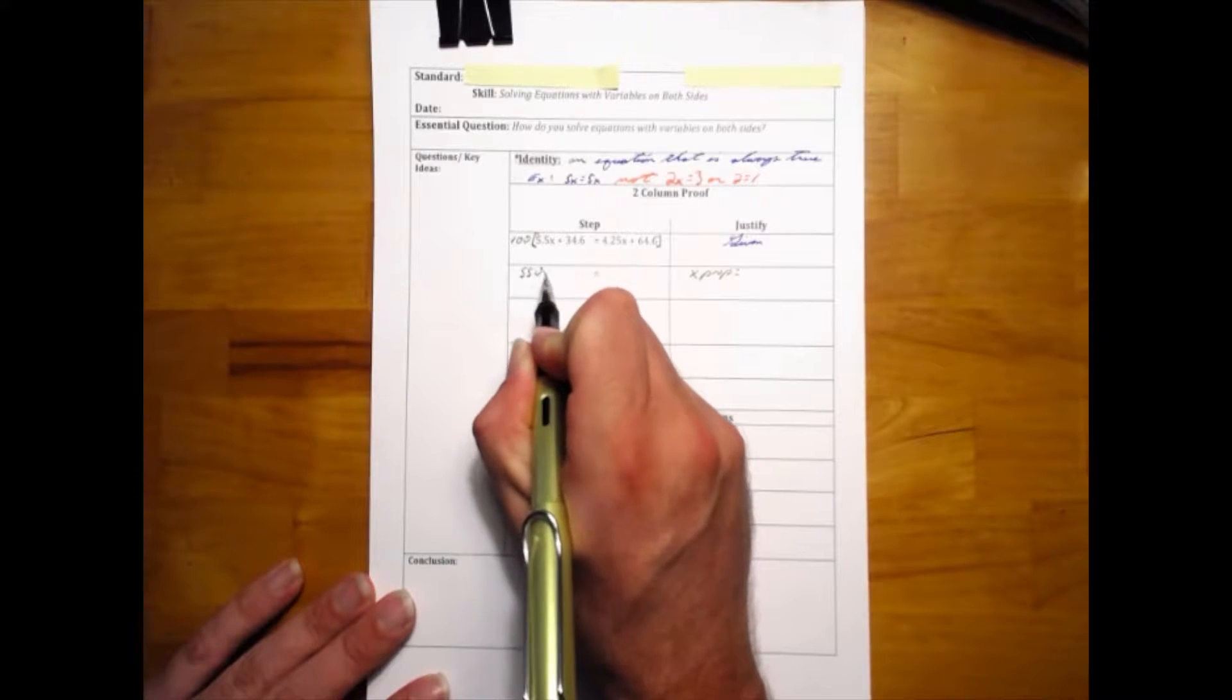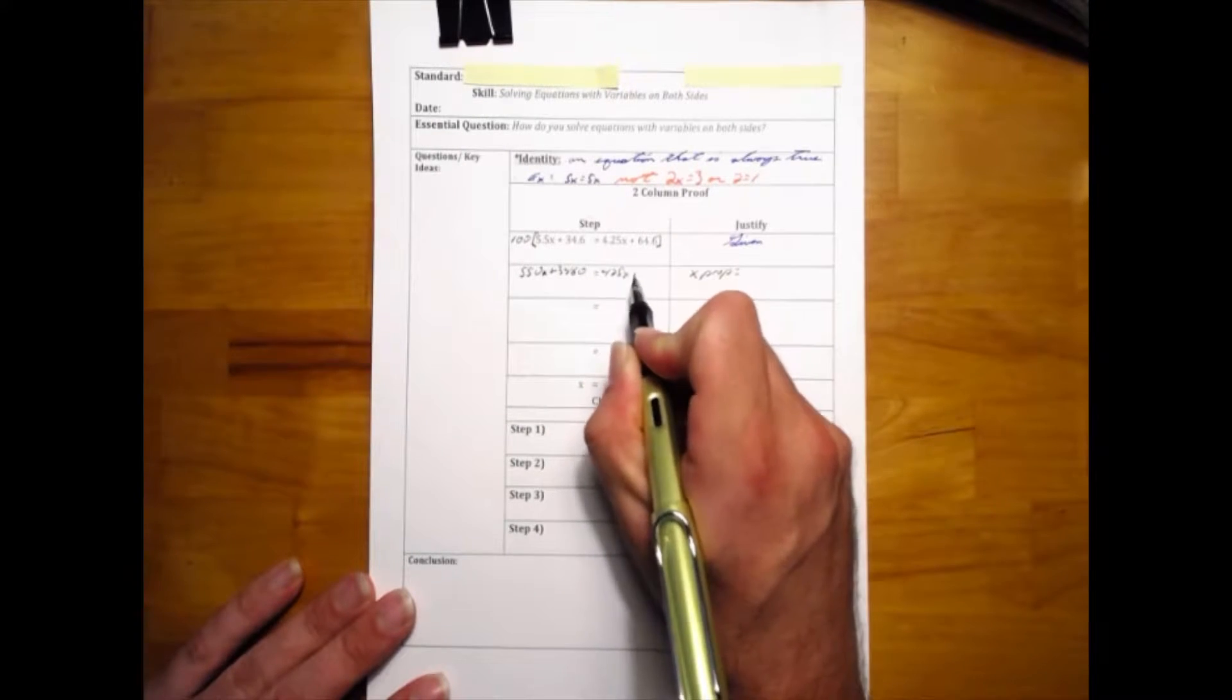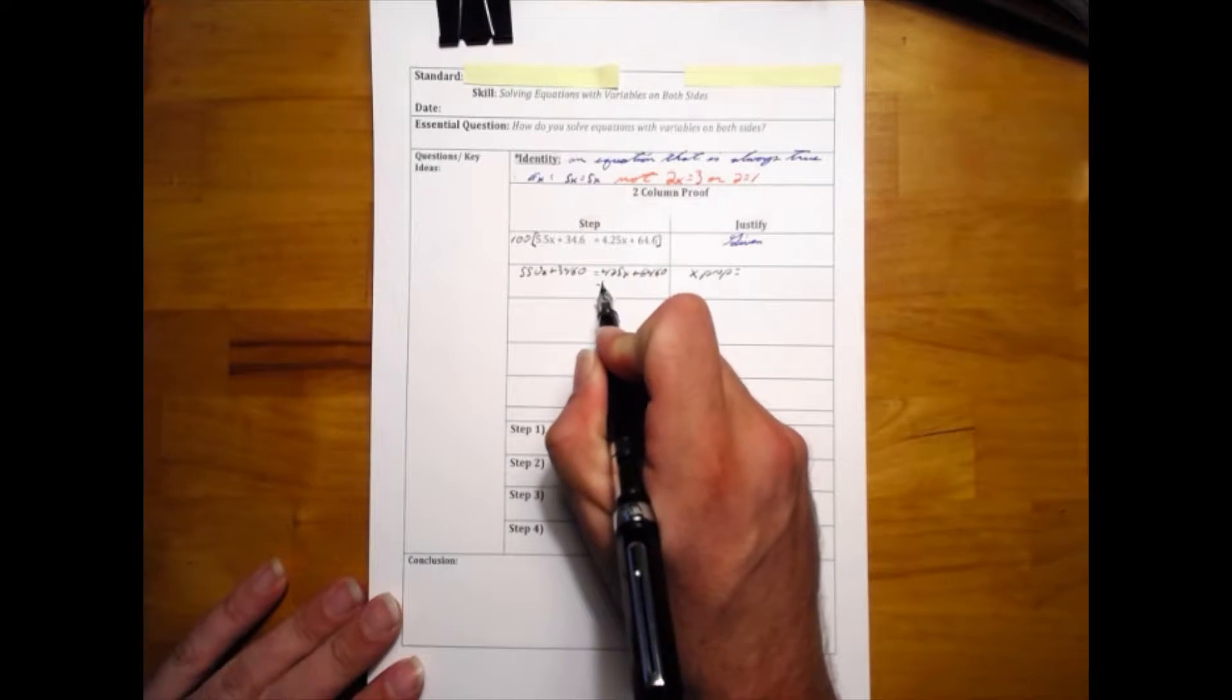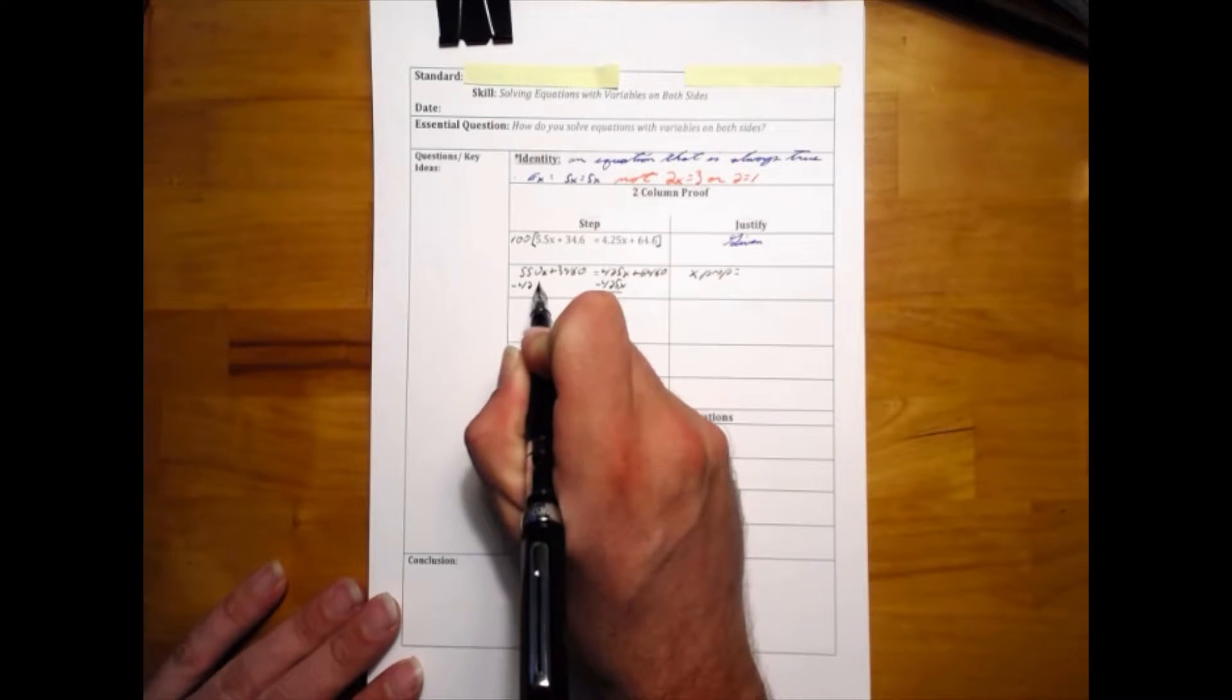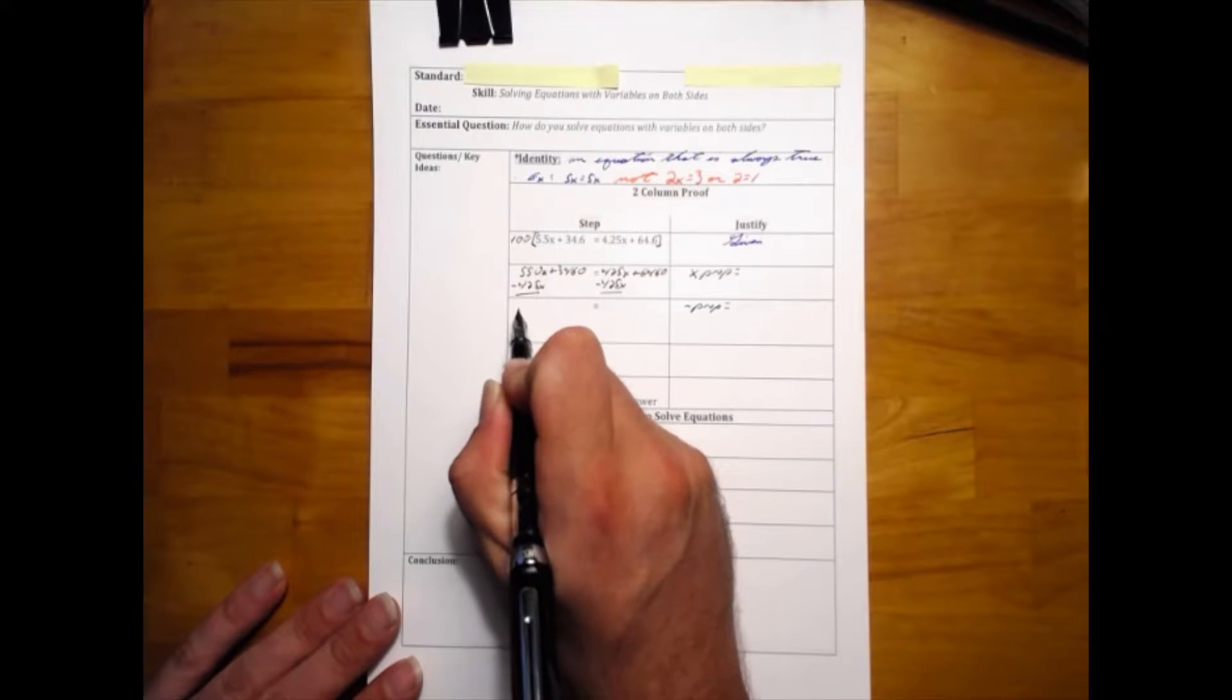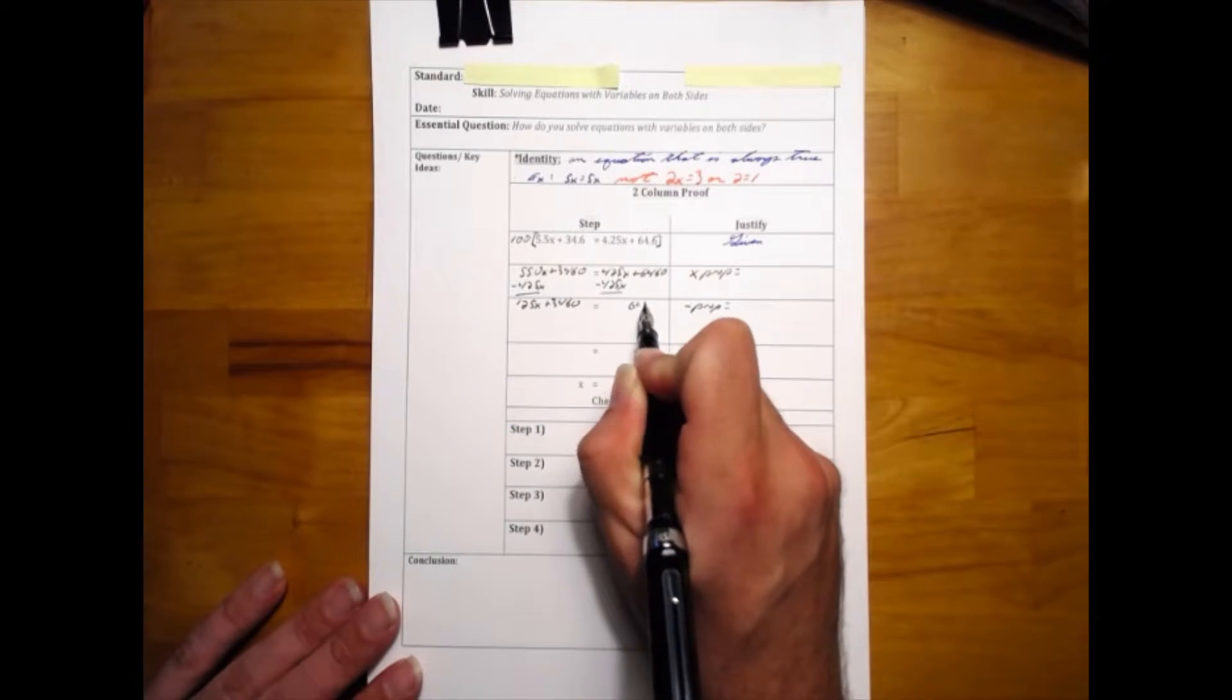equation is 550x plus 3460 equals 425x plus 6460. Now we're going to move the small x by subtracting 425x from both sides. This is using the subtraction property of equality. Our new equation is 125x plus 3460 equals 6460.